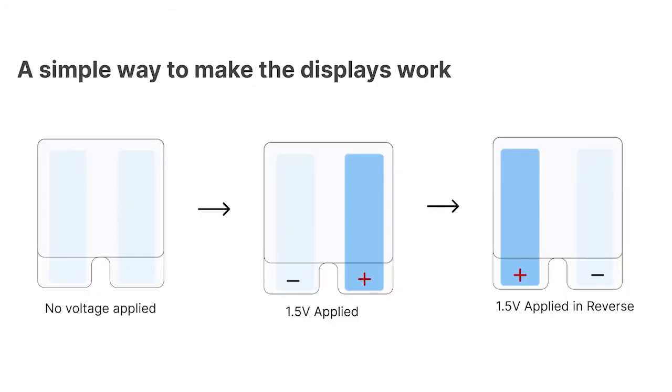The electrochromic displays are very easy to use. They have three states that they can switch between. When no voltage is applied, no PEDOT:PSS pattern is visible. When 1.5V is applied, one of the PEDOT:PSS traces becomes visible. When the voltage applied is reversed, the active trace also switches.